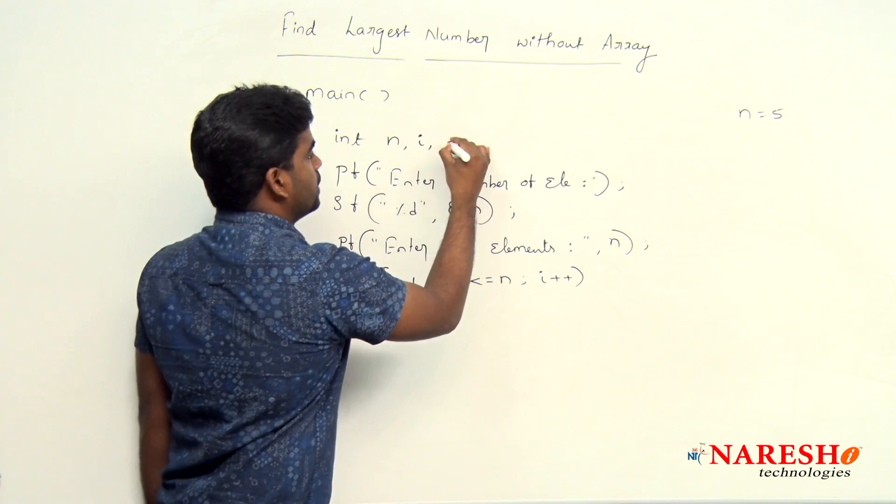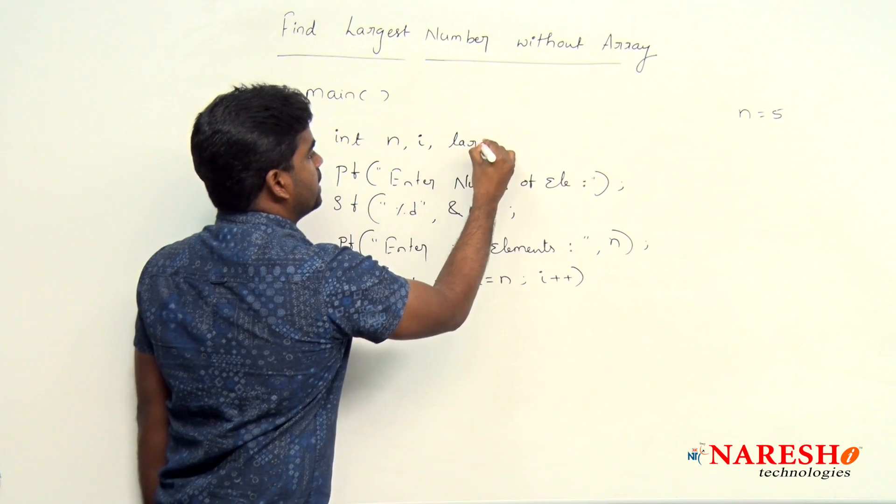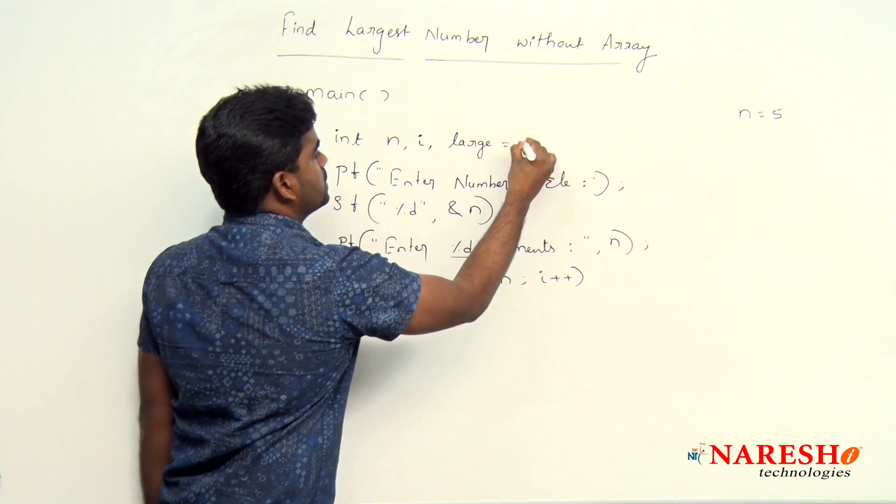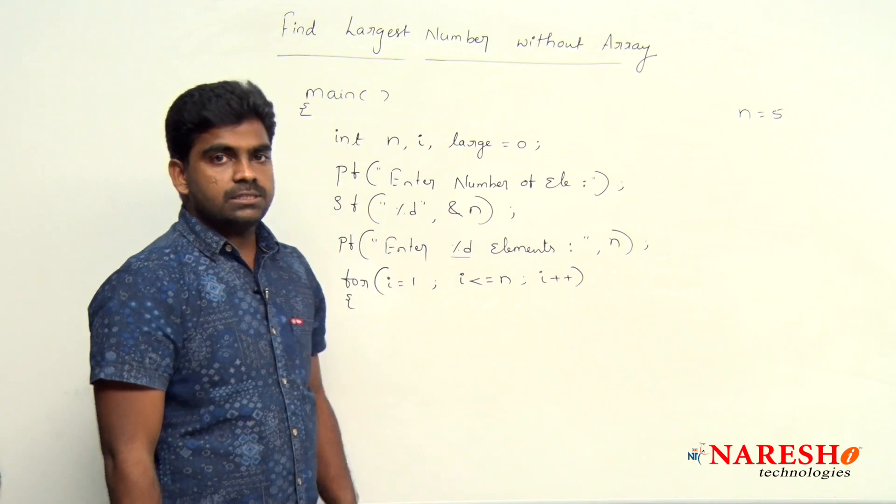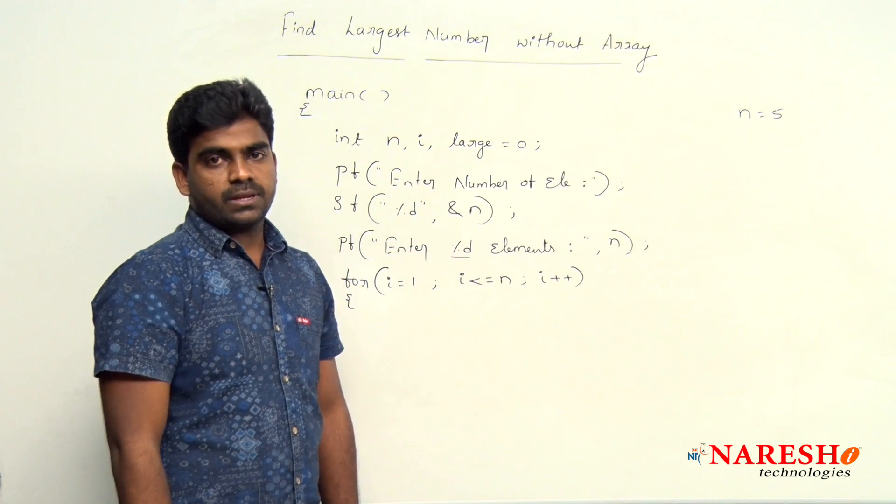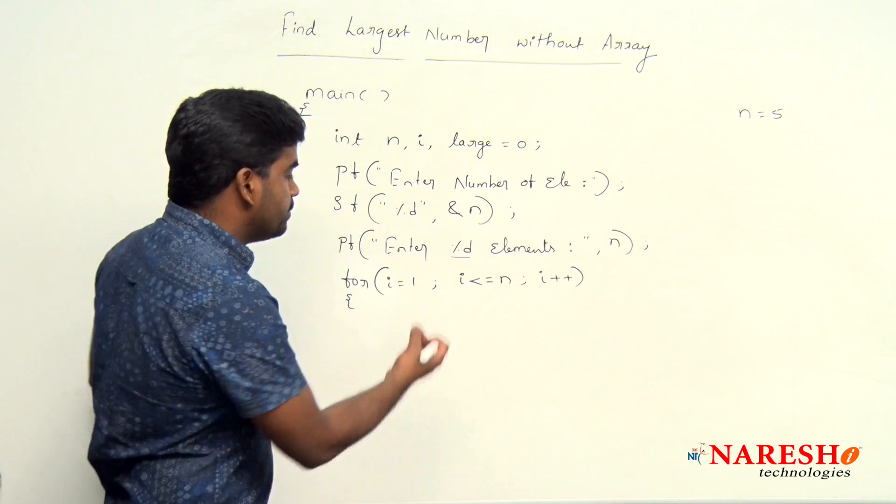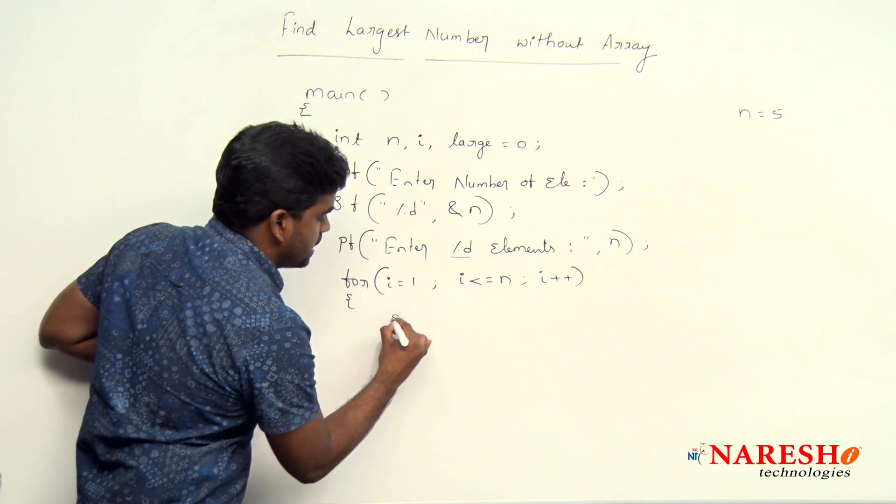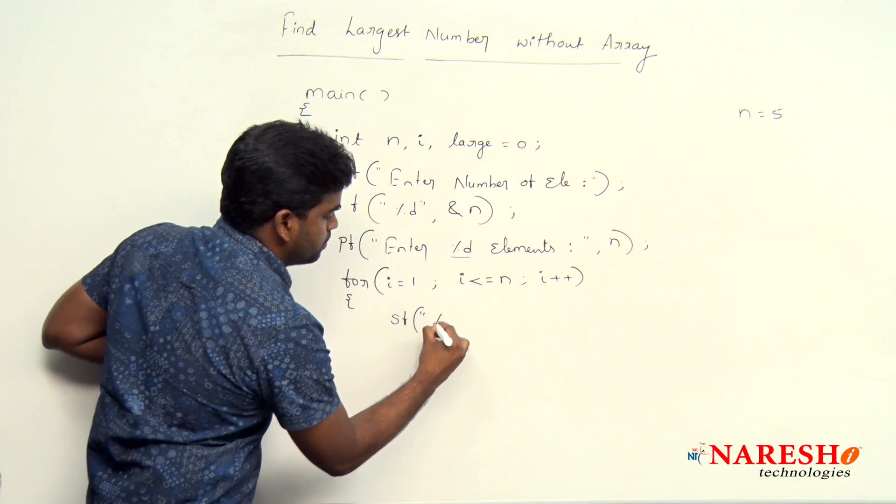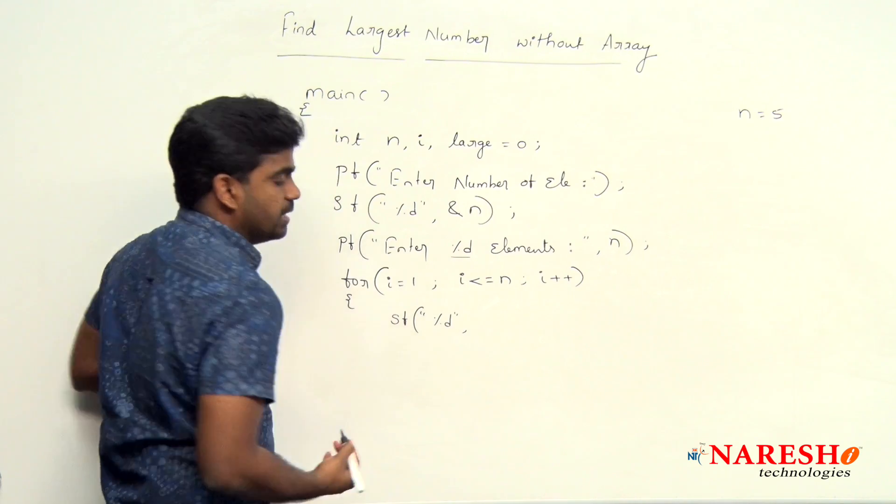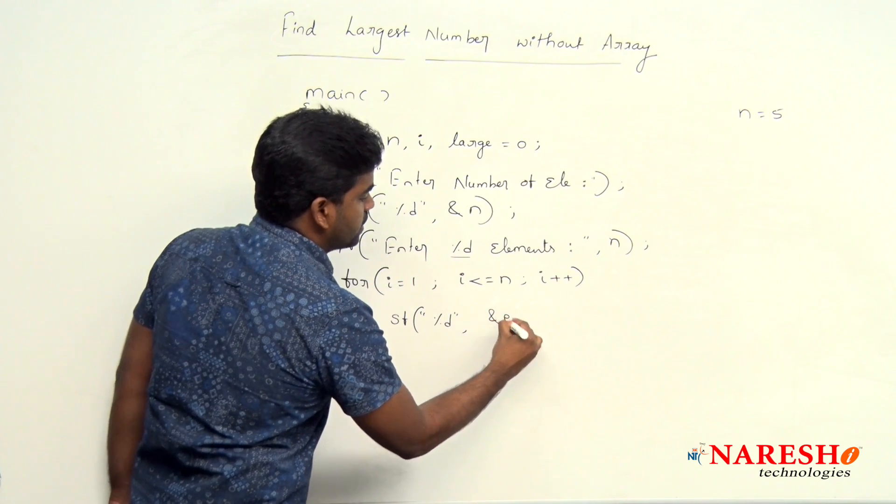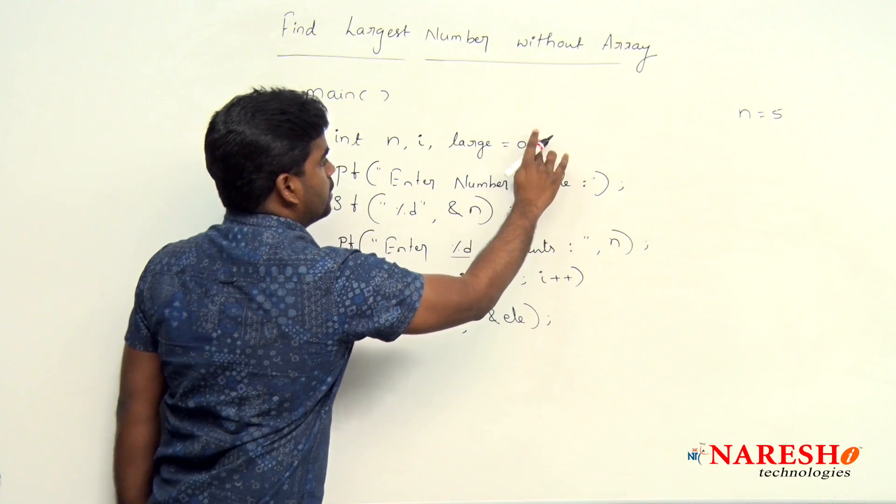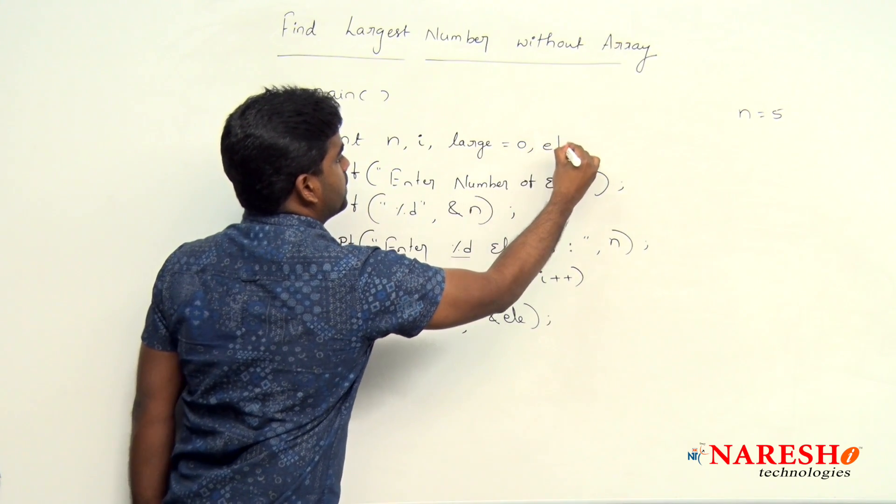Here it is i variable we are declaring. And next one, one variable we are taking large value is 0. What is that initial value? It is 0 I have given. Now every time whenever we are reading scanf percentage d, we are reading into one element, into element we are reading. Here it is element.